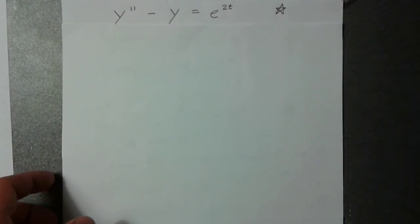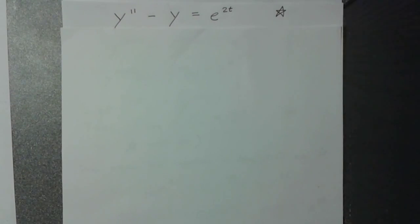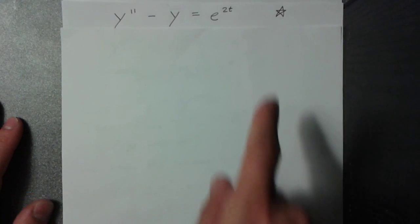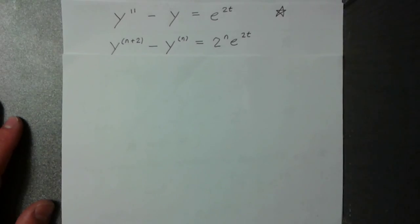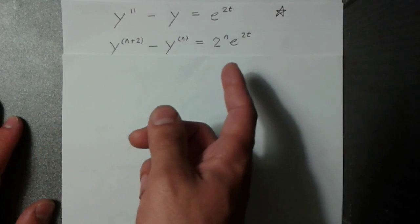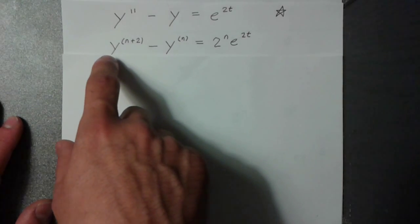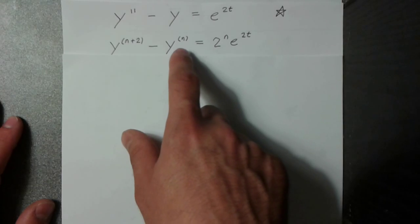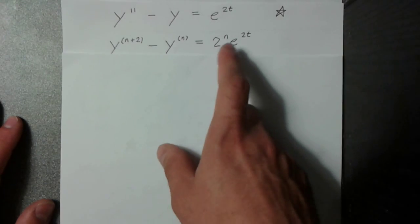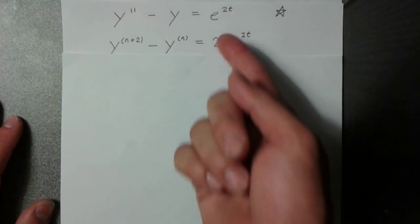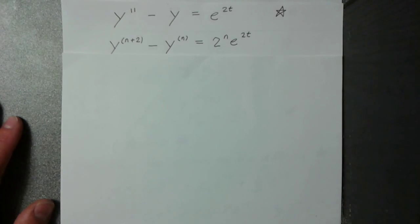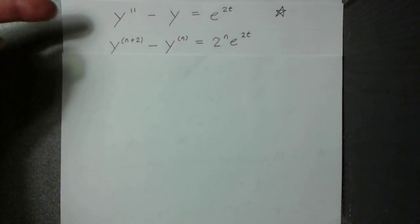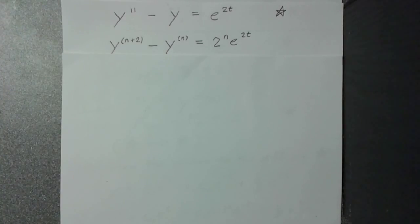Starting with this differential equation, which I'm calling star: if you take this equation and differentiate both sides n times, on the left you get the (n+2)th derivative of y and the nth derivative of y. On the right-hand side, each time you differentiate, an n comes down out of the exponent, so you get this result. If you're uncomfortable going from here to here, this can be proved using induction, but it's pretty straightforward, especially in this case.